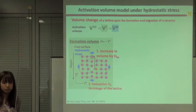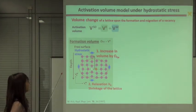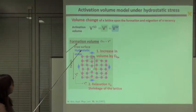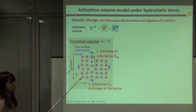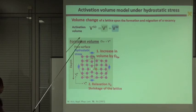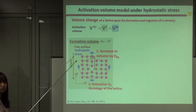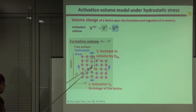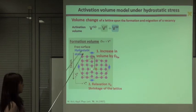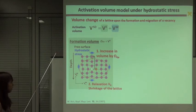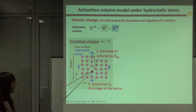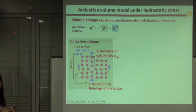So I'd like to explain activation volume models under hydrostatic stress. Activation volume is the sum of two components: formation volume and migration volume. For thin film geometry, the vacancy source is the free surface of the lattice. When the vacancy is created in crystalline germanium lattice, one germanium atom leaves the lattice site and migrates to the free surface. So the volume of the lattice increases by one germanium atomic volume. Besides, the lattice surrounding the vacancy relaxes into the vacancy center. So this leads to shrinkage of the lattice. This is relaxation volume.